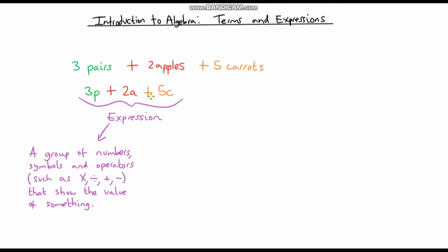This whole thing is called an expression, but what do we call each part of our expression? Notice there are three items that I've included in my expression, and each of these three items is called a term. The thing that a lot of people forget is that a term always includes the sign in front of it.